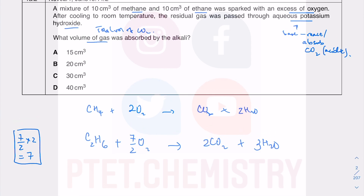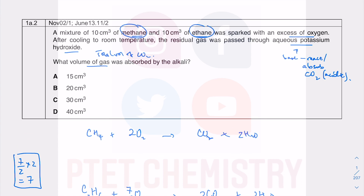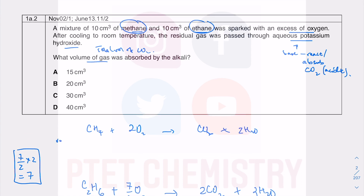Individually, burning 10 cm³ of each gas, you can work out how much CO₂ you get. Since methane and ethane are gases, we use volume ratios. The mole ratio for CH₄ → CO₂ is 1:1, so if you have 10 cm³ of CH₄ you get 10 cm³ of CO₂.